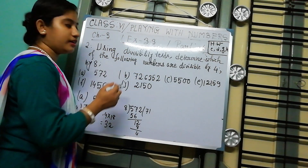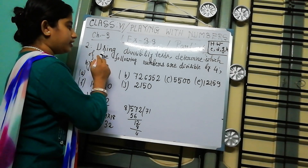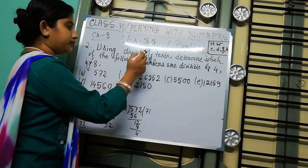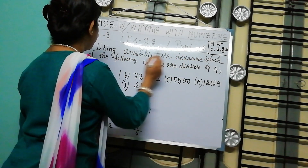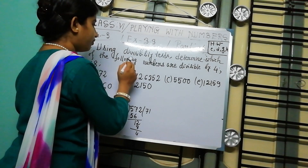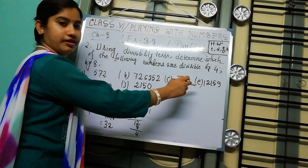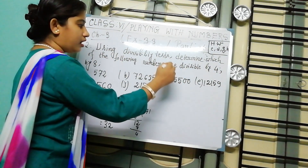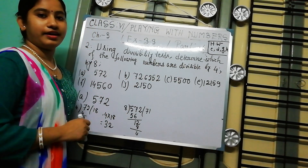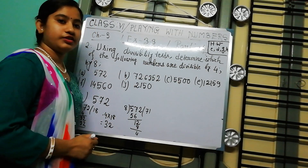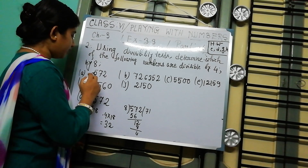Problem number 2 says: using the divisibility test, determine which of the following numbers are divisible by 4 and divisible by 8. First, number A.